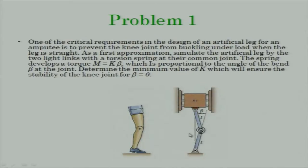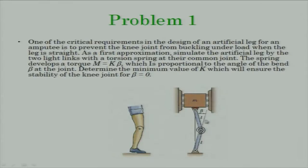An artificial knee requires rotational stability. M represents the mass of the person, this is the leg, and this is the knee joint. We model the knee joint in a very simple manner as a torsional spring. If beta is the relative angle between the two links, the internal torque is given by k times beta — analogous to how a normal spring gives internal force kx.